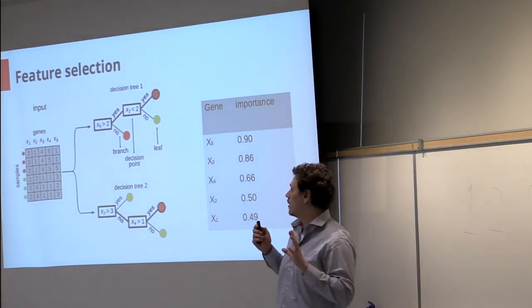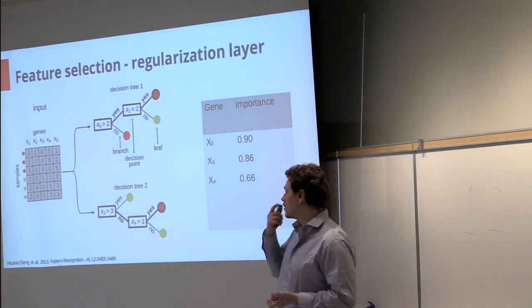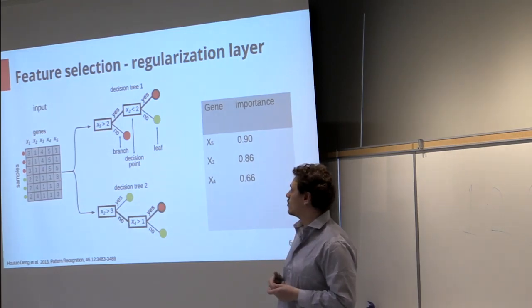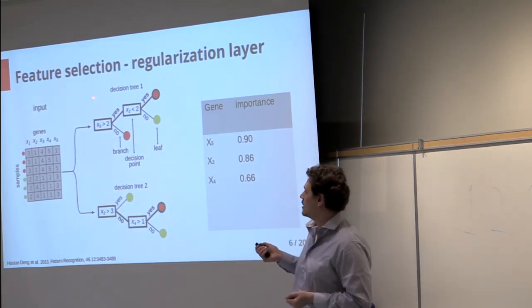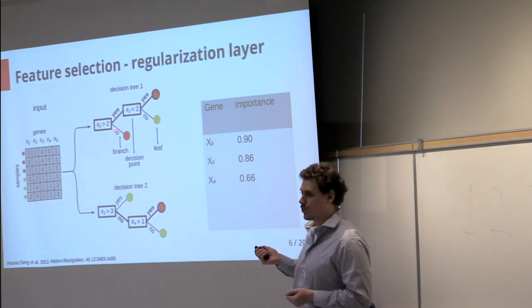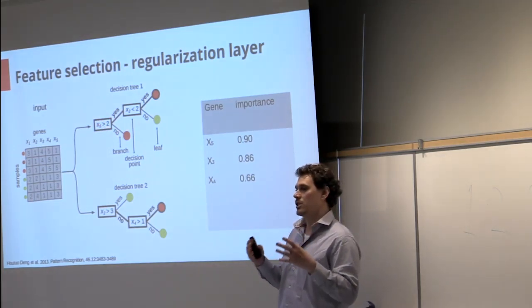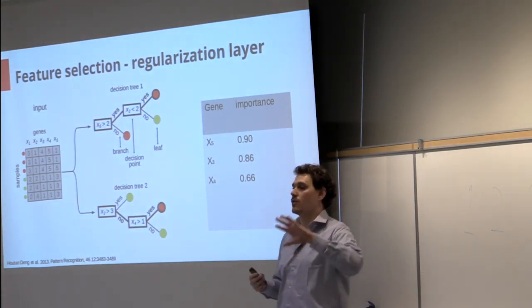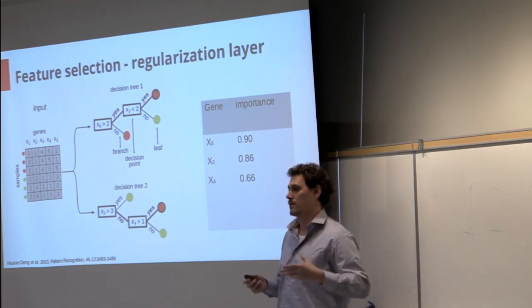So that is a classic random forest, but what we did is that we added a regularization layer that at each decision point selects the genes that are better than the genes that were seen before.